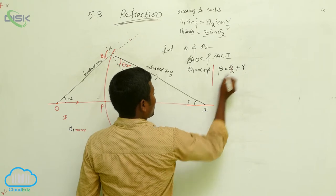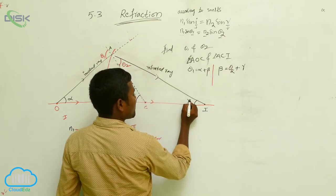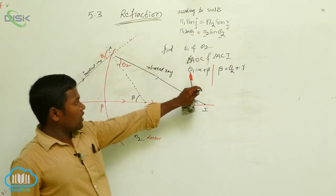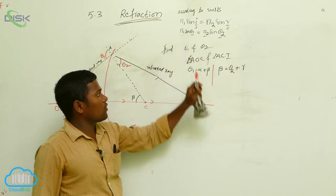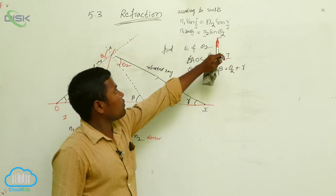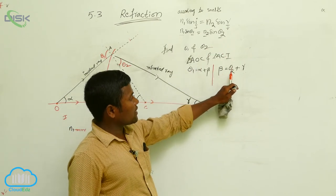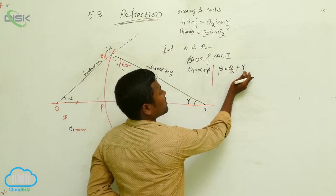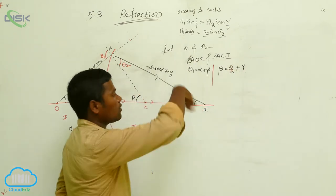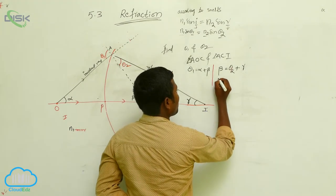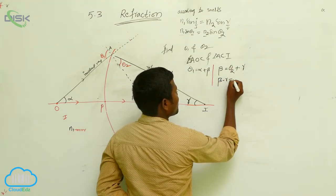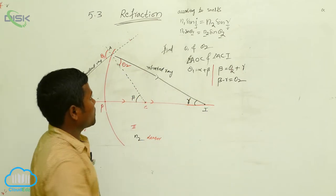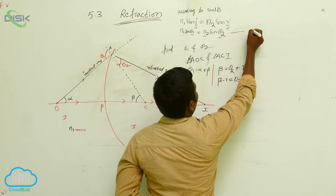Next, gamma is there — this is not r, this is actually gamma. What we actually want is θ1, which we already have, and next we want θ2. By sending gamma from the right side to the left side, we get: β − γ = θ2. So now we have both θ1 and θ2. Let us call this equation number 1.